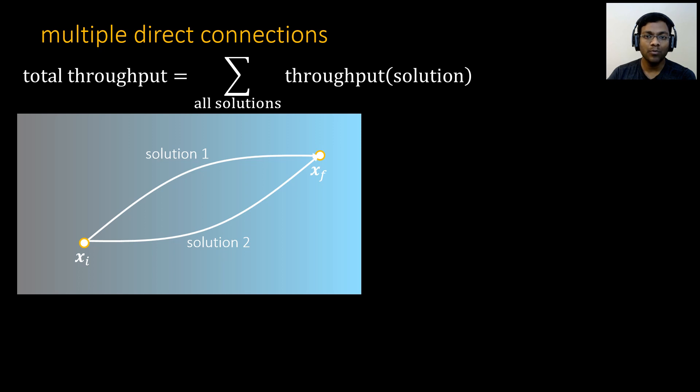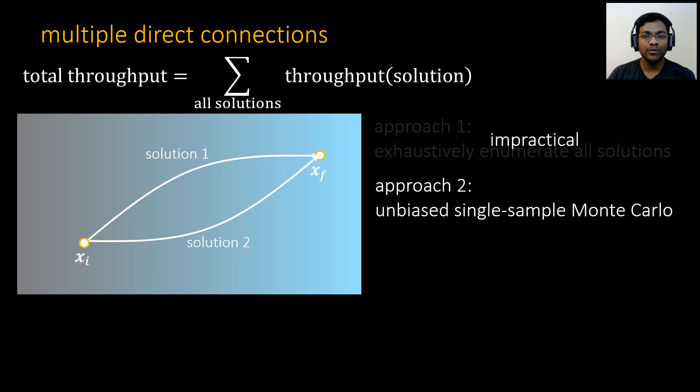So, we can have two or more valid direct connections, and the total throughput from xi to xf is the sum of throughput of all the direct connections. One way to compute the throughput is to enumerate all the solutions exhaustively and sum the throughput, which is impractical. The other approach is to estimate with an unbiased single sample Monte Carlo.